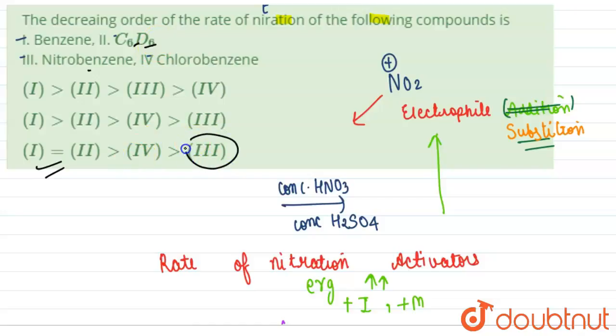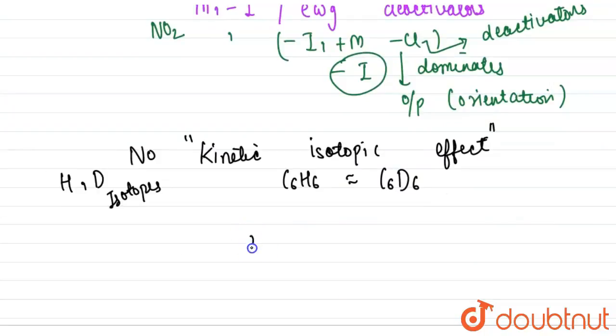They have same rate because there is no kinetic isotope effect. Least will be for nitrobenzene because NO2 is a strong deactivator - a very strong minus M showing group, an electron withdrawing group. It has more stronger effect than chlorine, and then we have chlorobenzene.